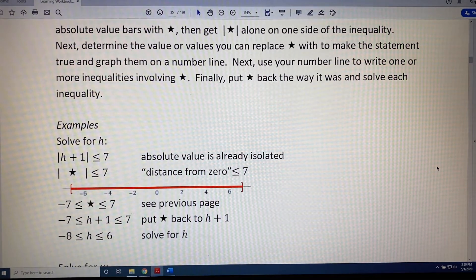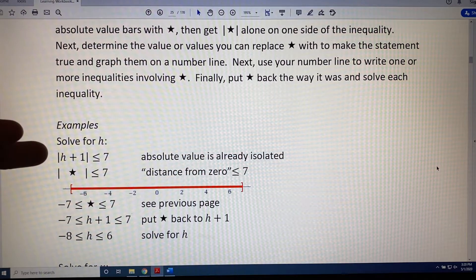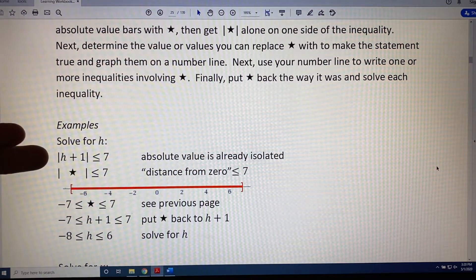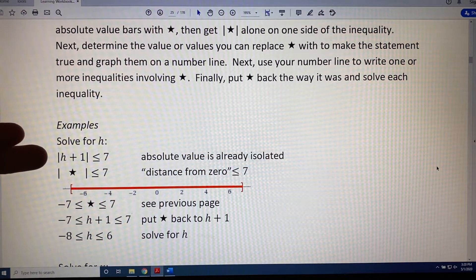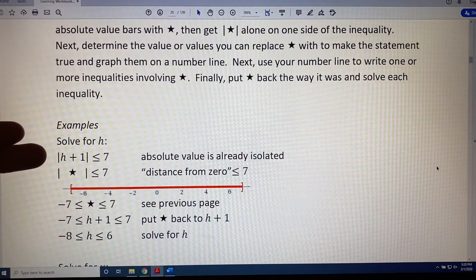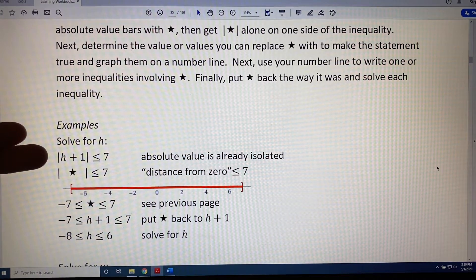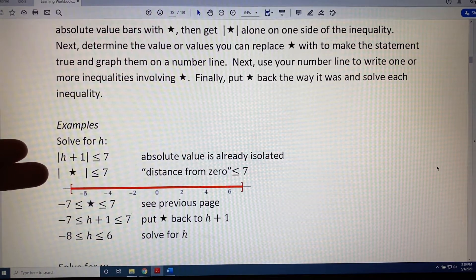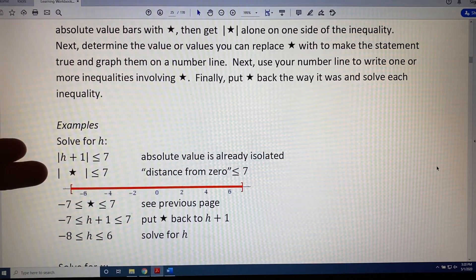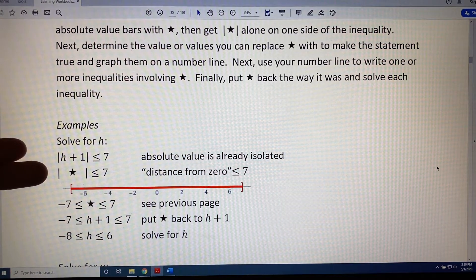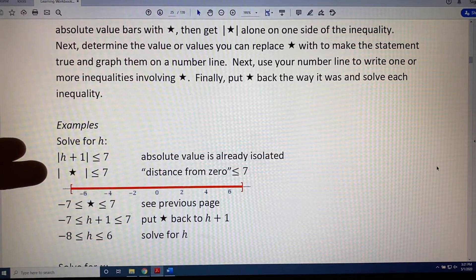Let's look at some examples. Solve for h. The absolute value of the sum h plus 1 is less than or equal to 7. The first step is to replace the h plus 1 with star. The next step is to isolate the absolute value of star, but the good news is it's already isolated. There is nothing on the left side of the inequality outside of the absolute value bars.